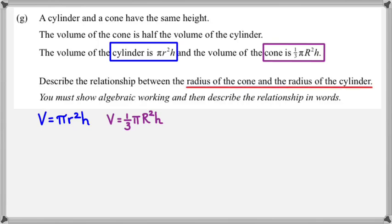So what are we asked to do here? We're asked to find a relationship between the radius of the cone and radius of the cylinder. What it's really saying is that we want to rearrange and write little r in terms of big R, or big R in terms of little r.